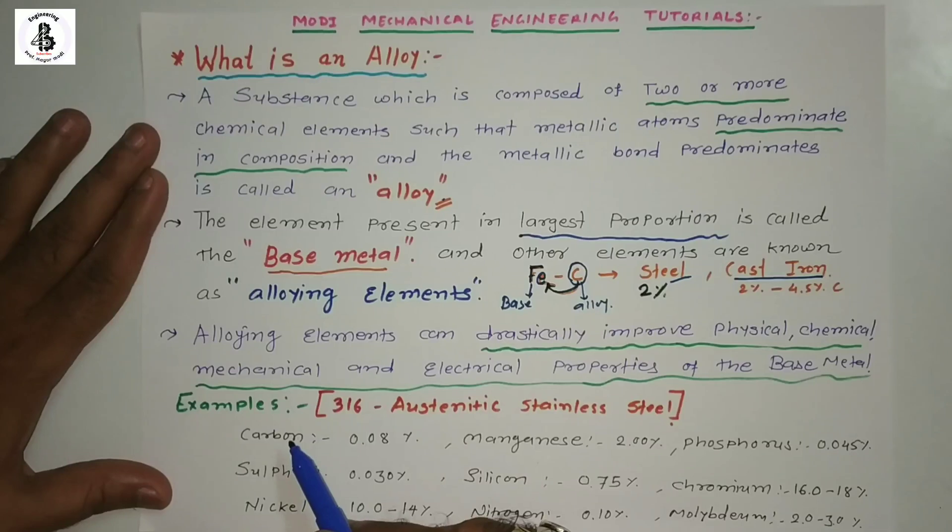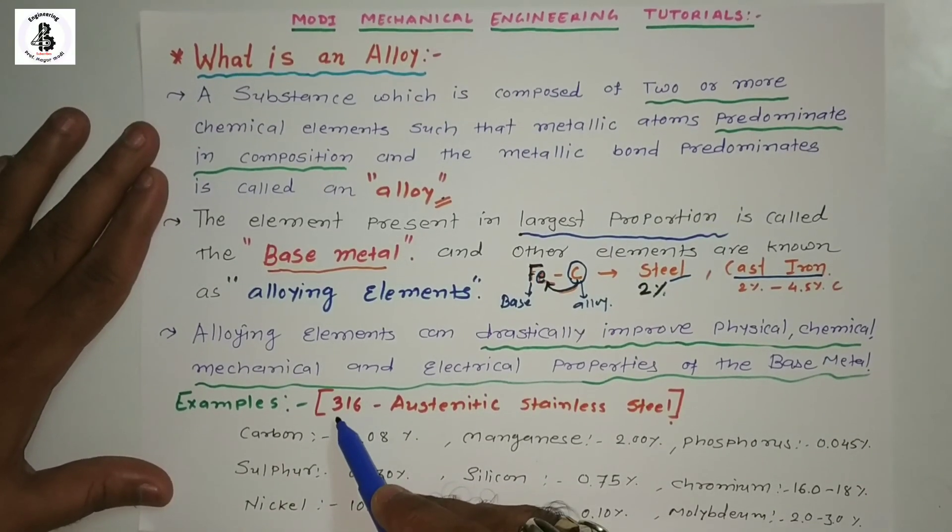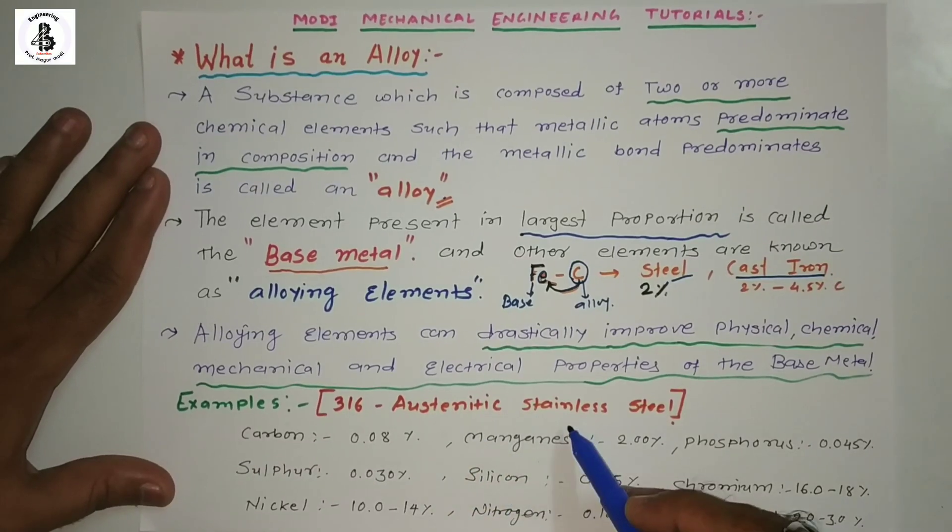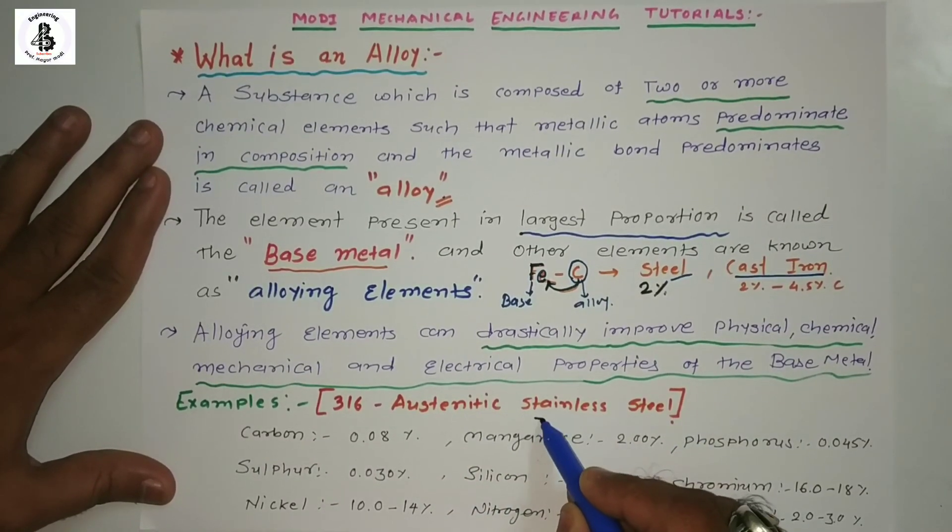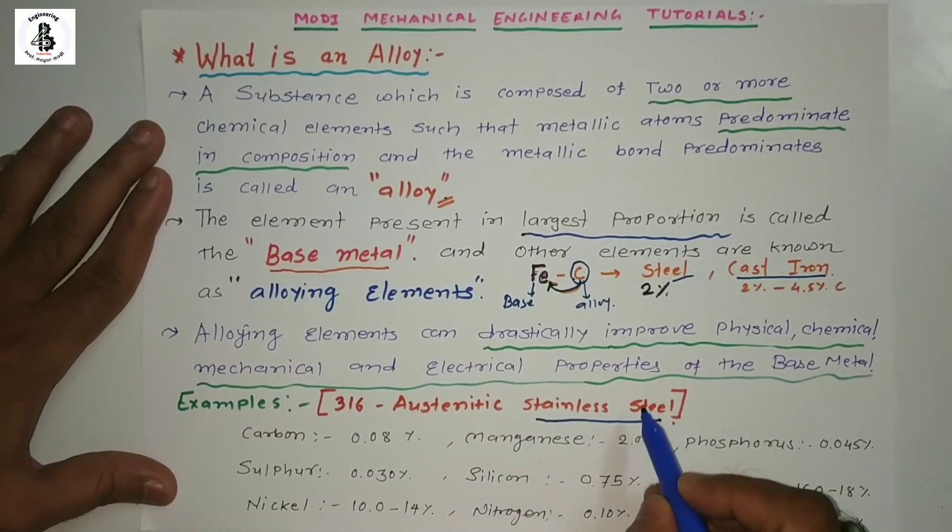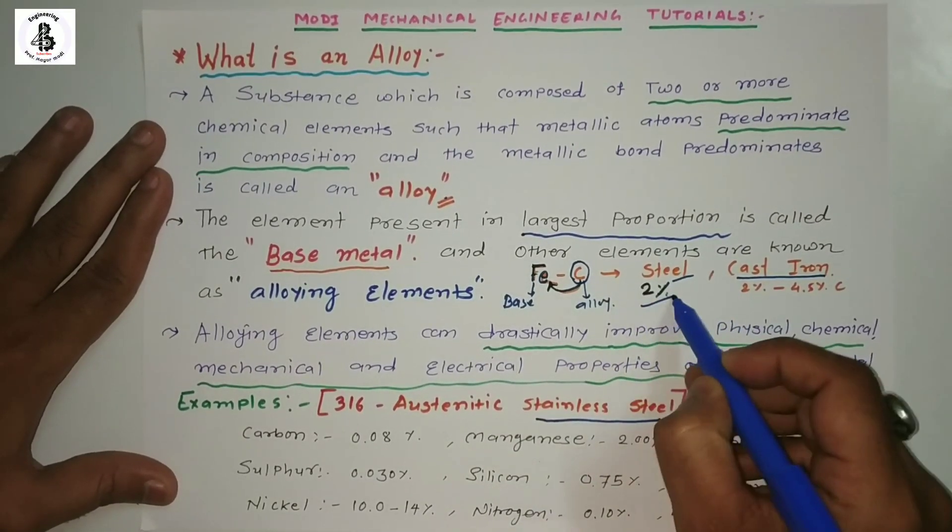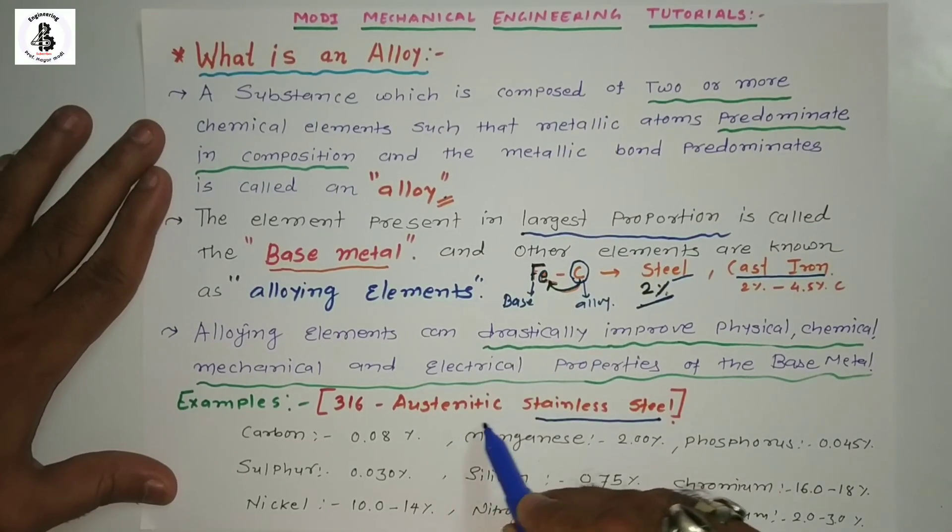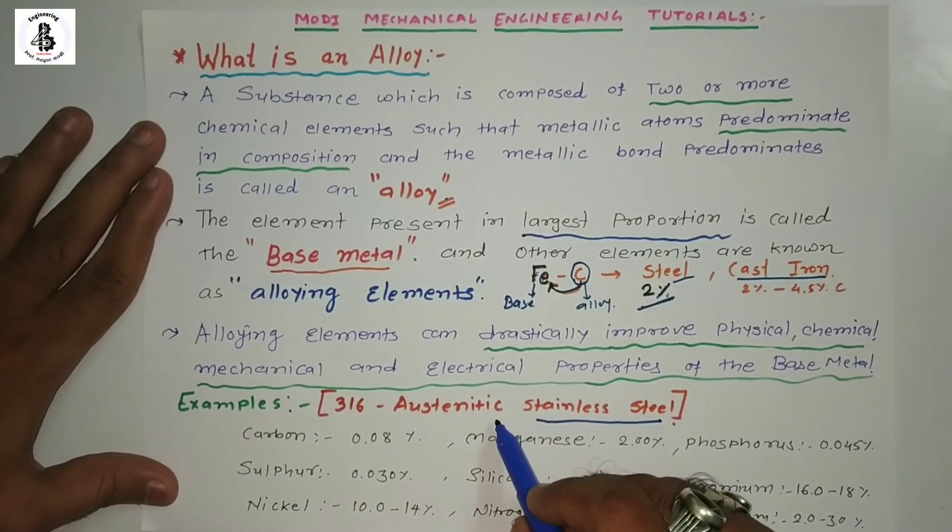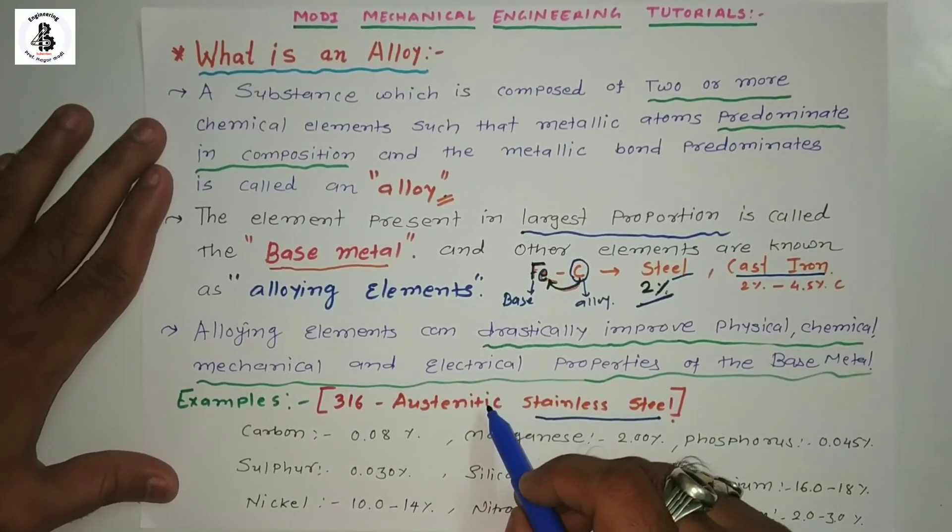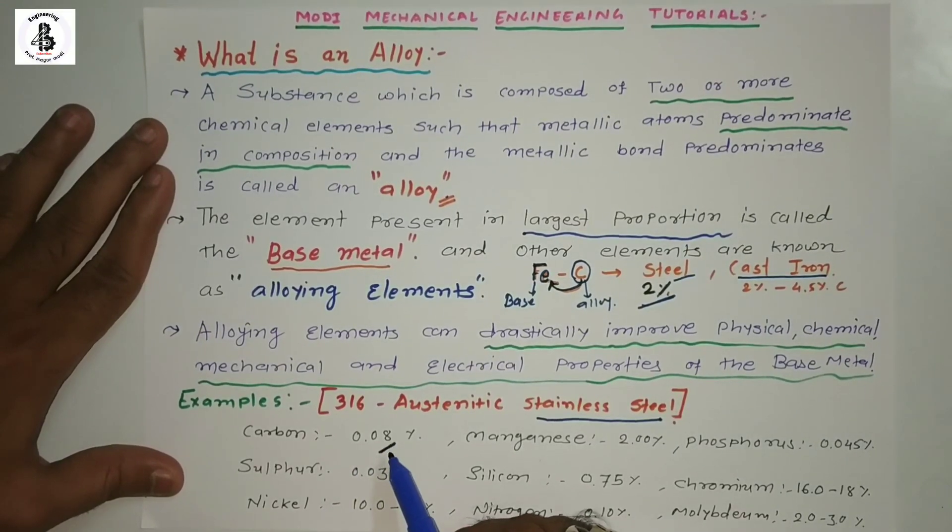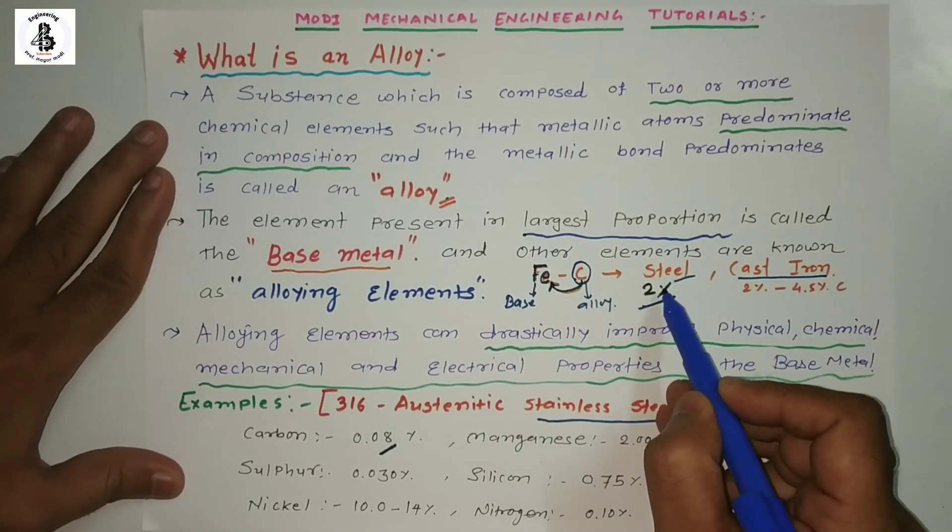Let us see an example: 316 austenitic stainless steel. This is a category of steels with less than two percent carbon present, and austenitic is one kind of soft phase of steel materials. The chemical composition includes carbon at 0.08 percent, which is in the category of steel.